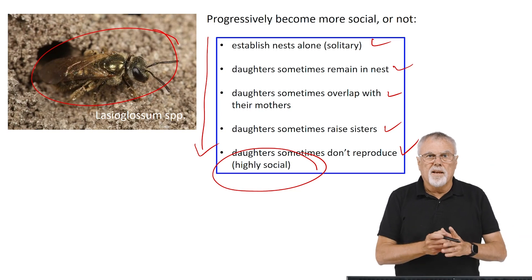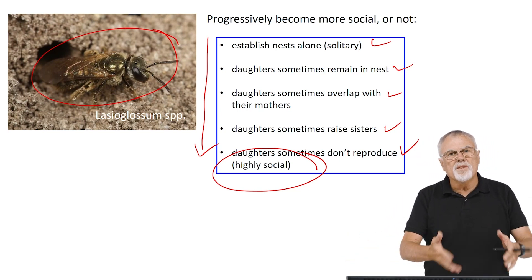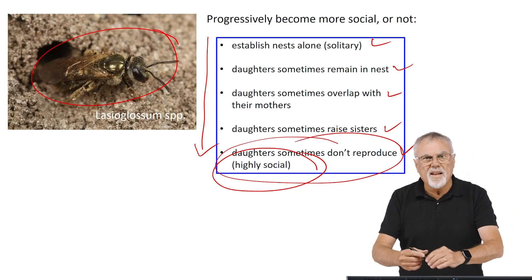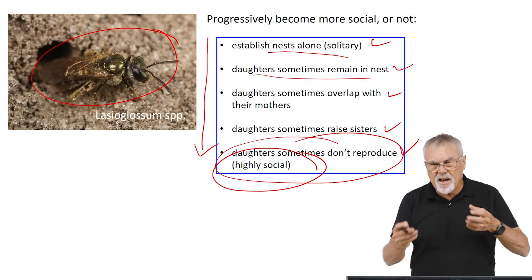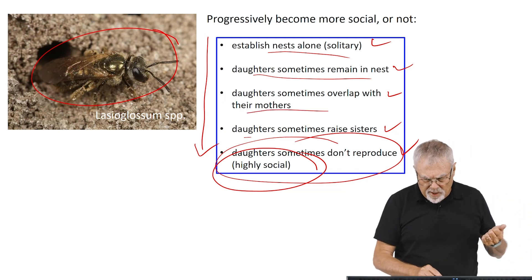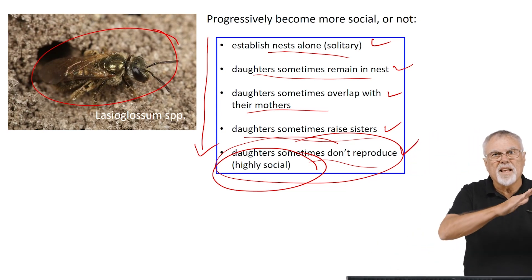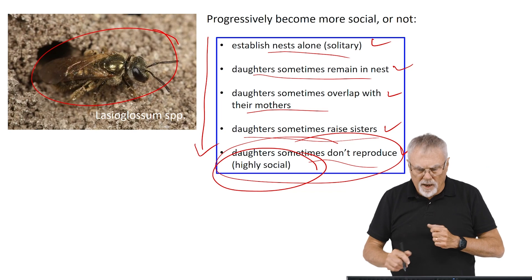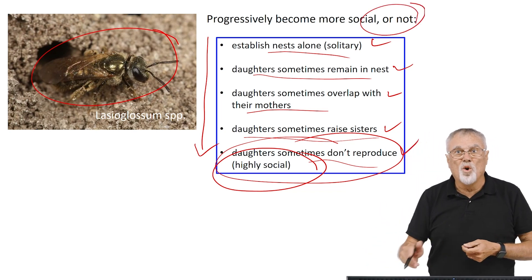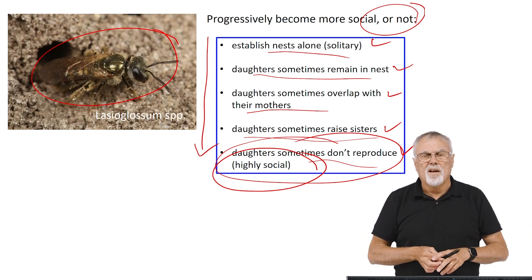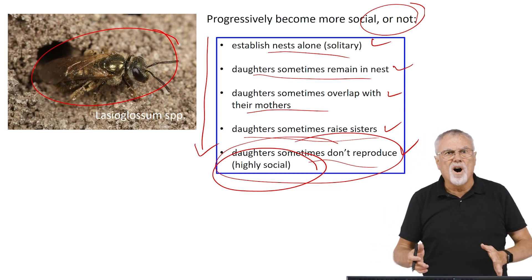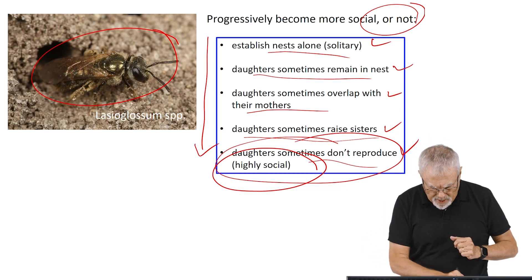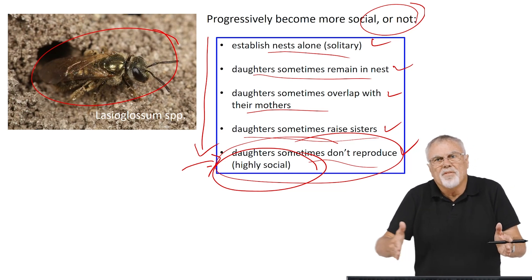One can look at this as different steps in the evolution of highly social ground-nesting bees. In the beginning they nested alone, then daughters remained in the nest with overlapping generations, and sometimes they stayed and raised their sisters, giving up their own reproduction. This could be seen as a progressive evolutionary process from solitary to highly social. However, it appears that's not entirely true, because you find all of these individual stages being terminal stages in different colonies of this particular species — yet a nest that becomes highly social went through this progression, as if playing out the phylogeny of the highly social trait.